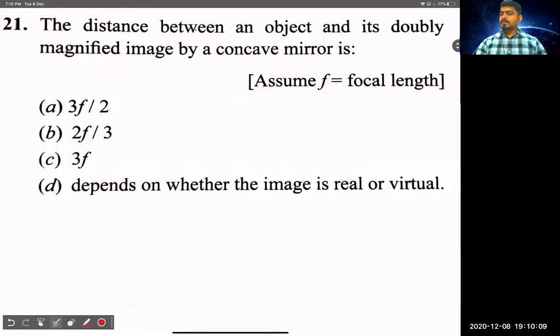Okay, the distance between an object and its doubly magnified image by a concave mirror is. Assume f to be focal length. So, how will this question be?